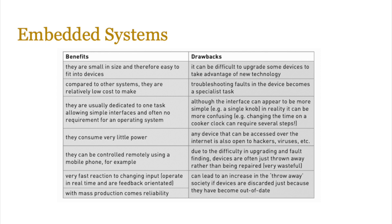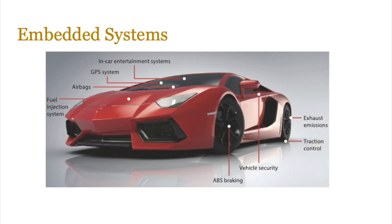Embedded systems can be of any type. An autonomous car will have a number of embedded systems: one that controls the in-car entertainment system, perhaps another for the GPS system, one for the airbags, one for the fuel injection system, one for managing the electric battery, one for braking, one for vehicle security, one for exhaust emissions, and one for traction control which prevents skidding. So a number of embedded systems might be part of a bigger device.